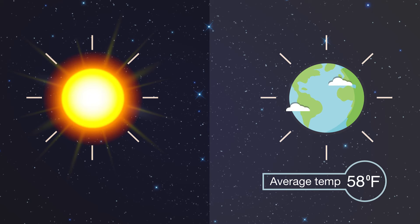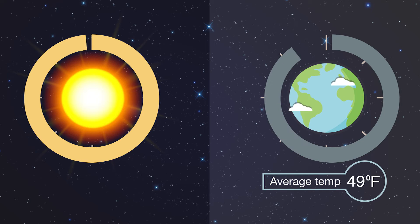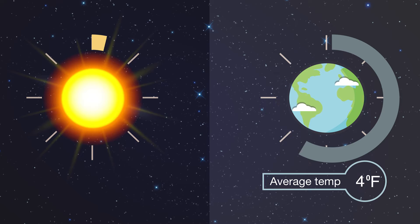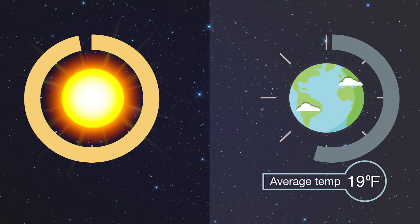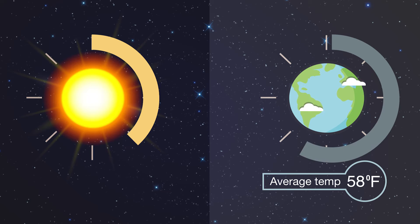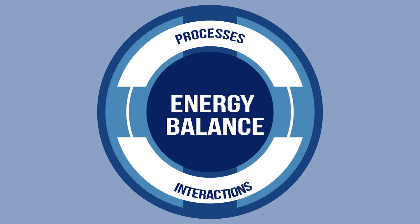When one or more parts of the energy budget changes, an imbalance occurs, and then the Earth's average temperature gets warmer or colder in response. The Earth's energy budget has many individual processes and interactions that contribute to the balance of the budget. Some of these processes are very influential, and some have a much smaller impact. Today, I'll be covering the processes that have the largest impact on the budget.